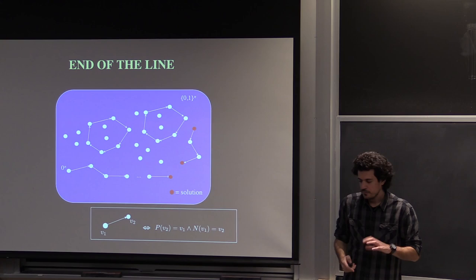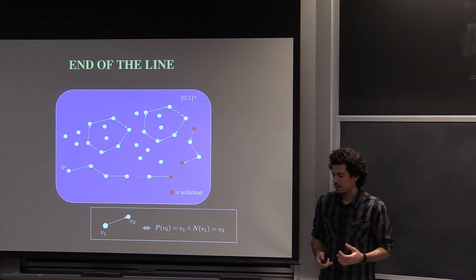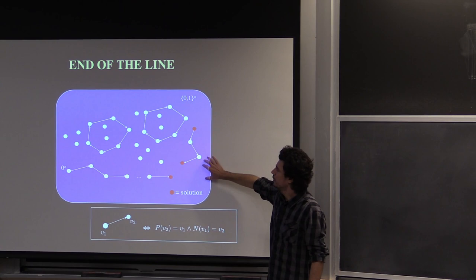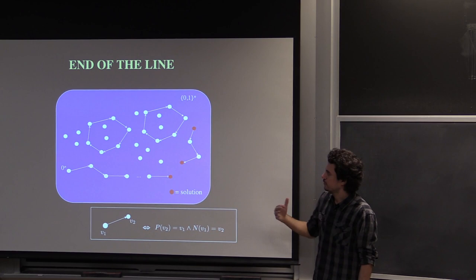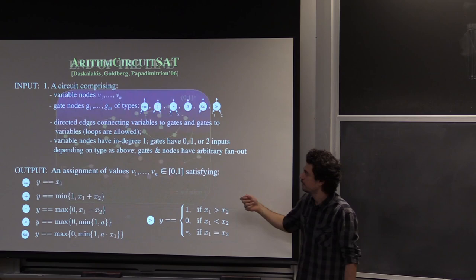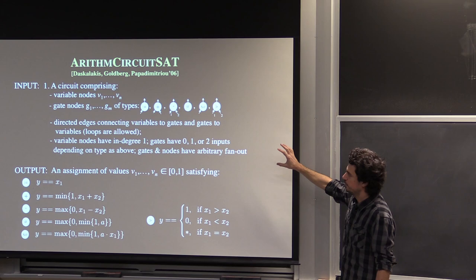The problems we were targeting — Nash equilibrium and Brouwer's theorem — had a more continuous flavor. So instead of reducing End-of-the-Line directly to Nash and Brouwer, I introduced ArithmeticCircuitSAT, which is closer to these problems and has a continuous flavor. There were questions last time about its definition, so I'll be more explicit now.